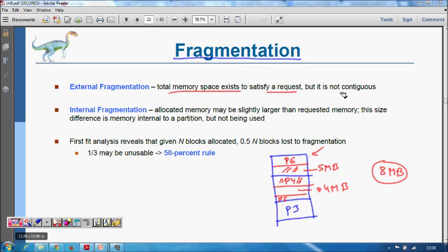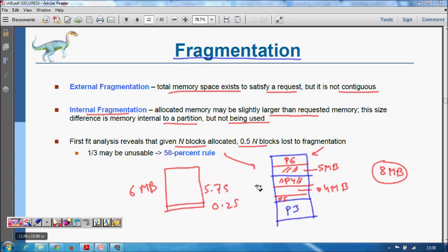External fragmentation: total memory space exists to satisfy the request but it is not contiguous. Internal fragmentation: allocated memory may be slightly larger than requested memory. This size difference is internal to the partition but not being used. For example, if I have given you 6 MB of space but the process is actually using 5.75 MB, then 0.25 MB internal to that space is unused. First fit analysis reveals that given N blocks allocated, 0.5N blocks are lost due to fragmentation.